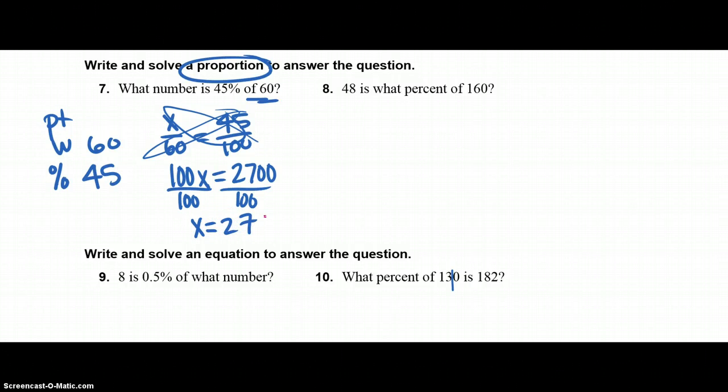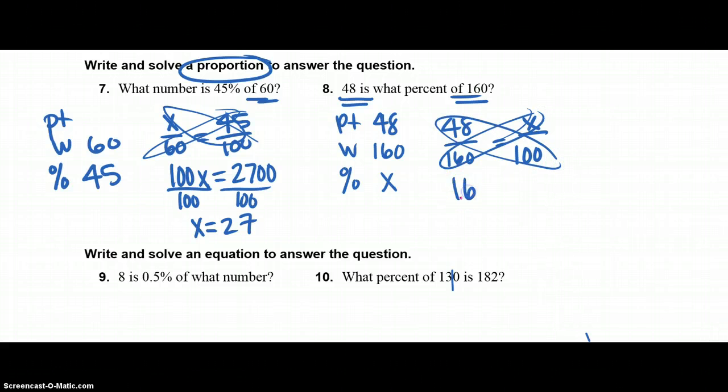Same thing on 8. 84 is what percent of 160? 48 is, is is my part, what percent I'm trying to find, and my whole is of 160. So I have part over whole equals percent over 100, and then cross multiply, so 160 times x is equal to 4800. To solve for x, I need to divide both sides by 160, and you get x is equal to 30, and that needs to be a percent, since you're solving for what percent.